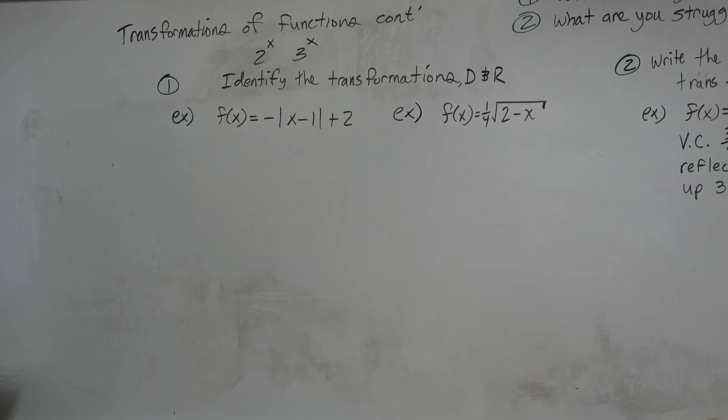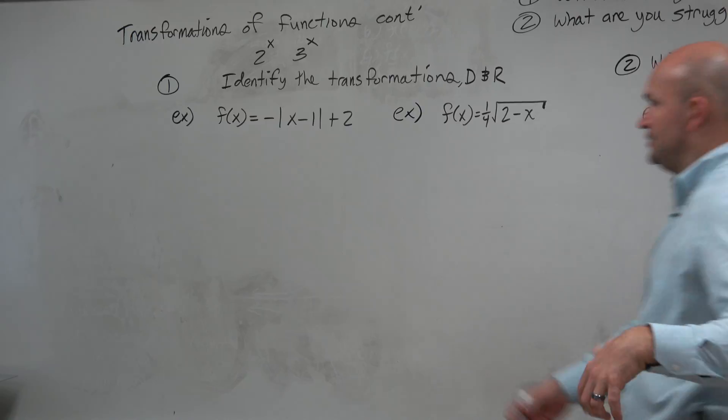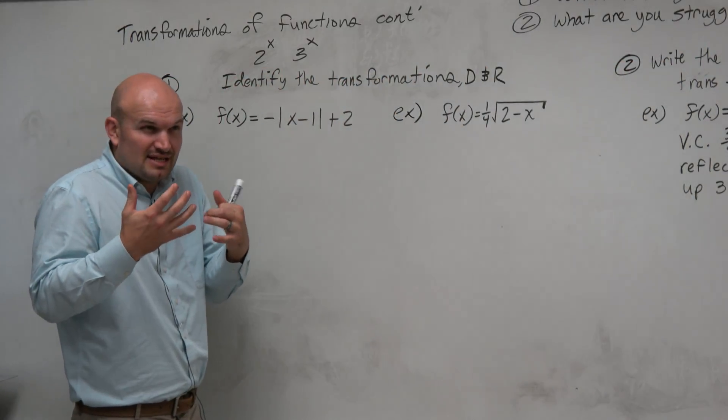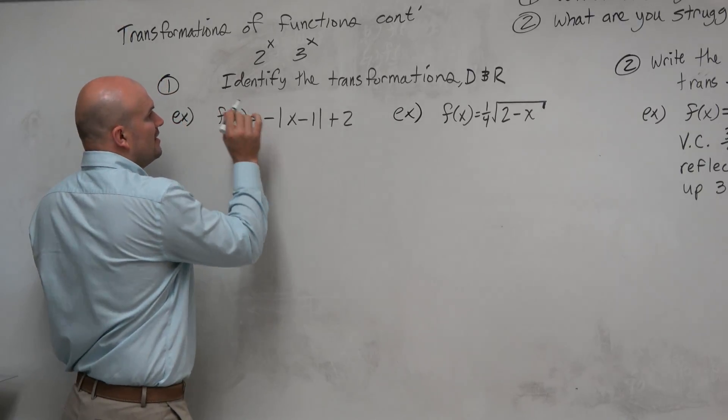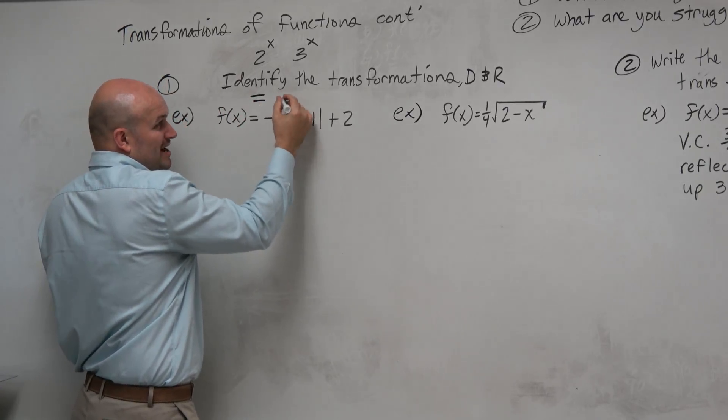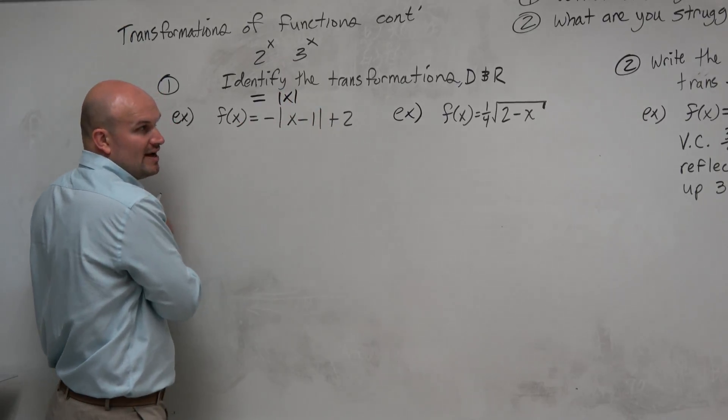So when we're looking at this example, there's a couple things I want you guys to look at, or first to understand. You don't need to write this down when you're doing these problems, but I think conceptually it's important to understand the identity function, the parent graph, the parent function, is absolute value of x.